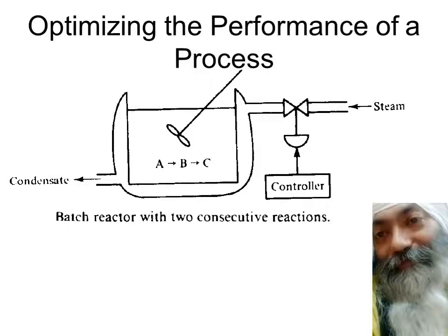Hello friends. We are coming to the third objective of any controller or control of the process, and that is the optimization of performance of the process. You have a process and you want to go in for economic optimization or maximization of profits, as we call it, from that given process.